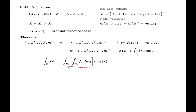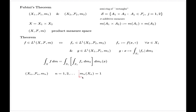The construction of the product measure space can be extended to a setting where you have not two but a sequence of measure spaces. When you have a sequence of measure spaces where n takes values 1, 2, and so on, with the extra condition that every measure space is finite and the measure of the universal set in each case is just 1, the construction of the product measure space and the associated Fubini's theorem can be extended to this setting too.